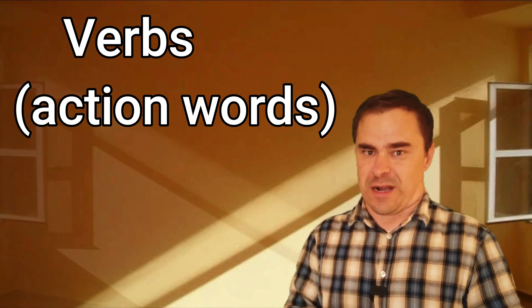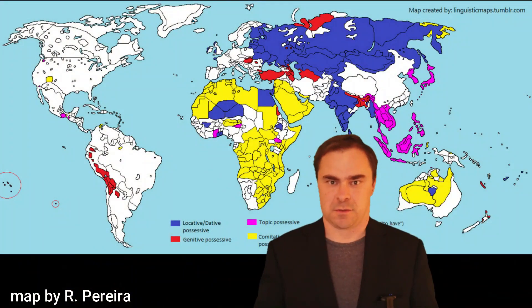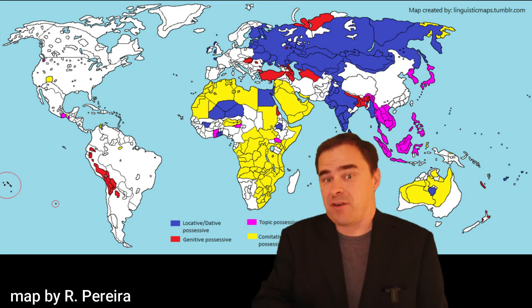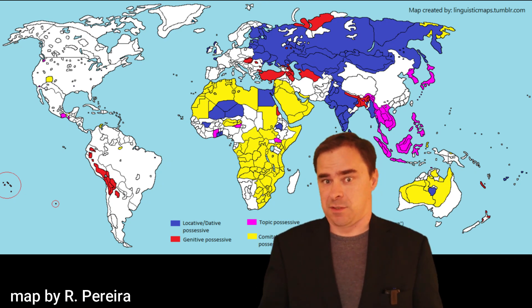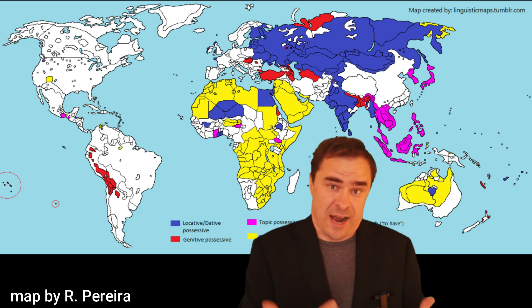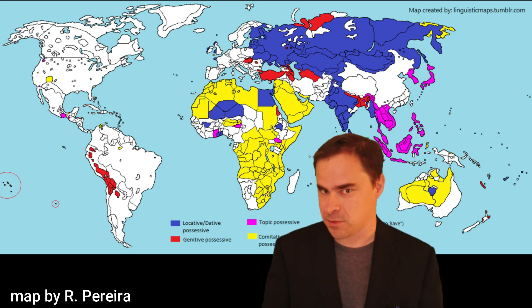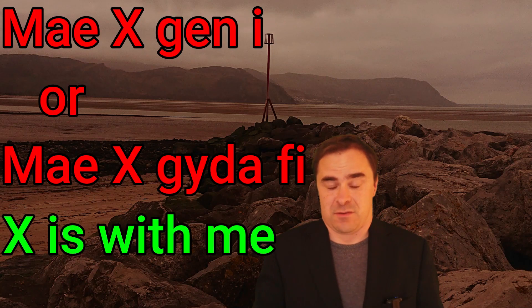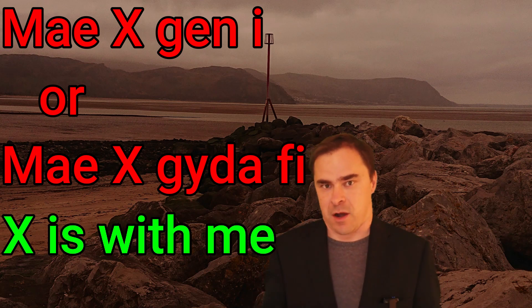One thing that sets analytic languages apart is they have verbs for very specific things. English and Chinese, both analytic or isolating languages, have a verb 'to have.' Look at this map of how different languages convey the verb 'to have' — as in 'I have a house.' Analytic languages are more prone to actually having that verb. But that's not how it works in most languages. Celtic languages, like Welsh, literally say 'it is with me that I have a house.'